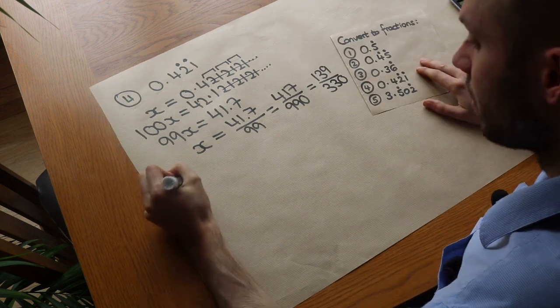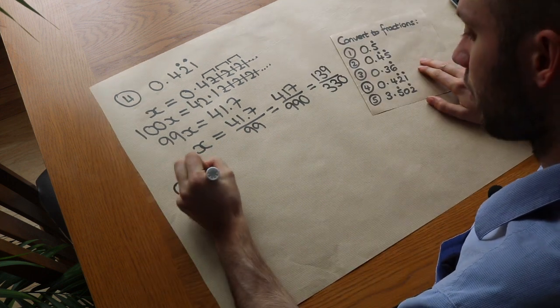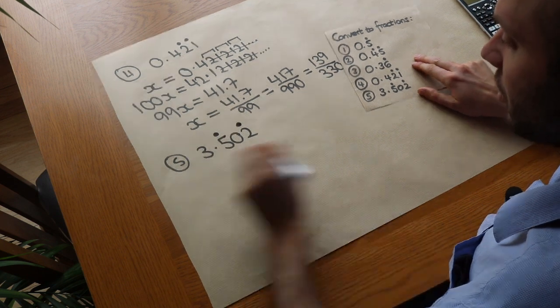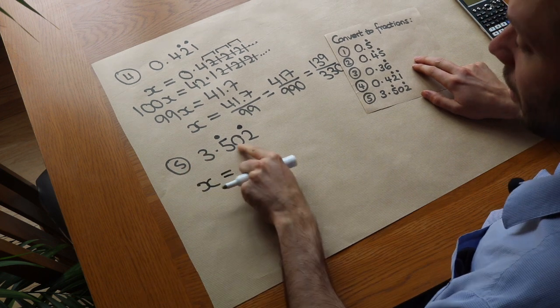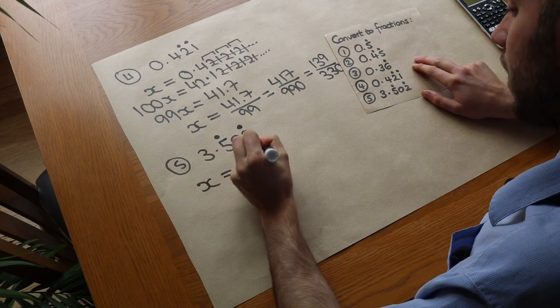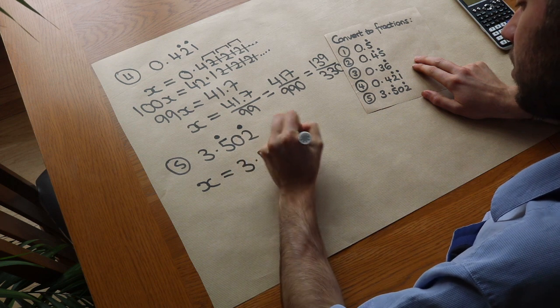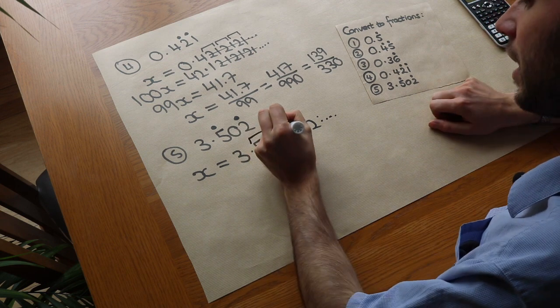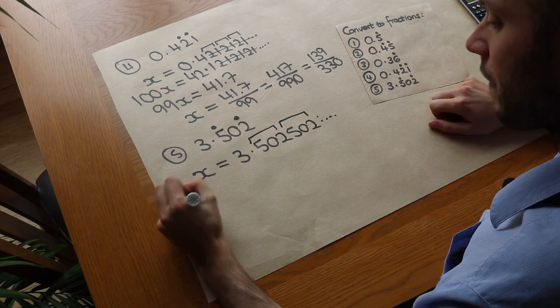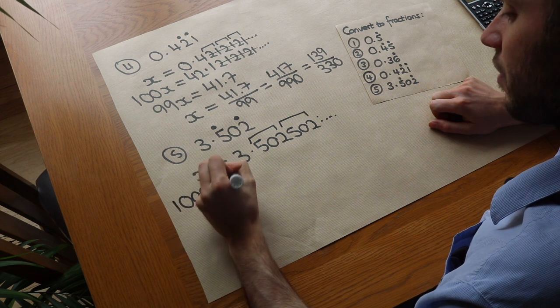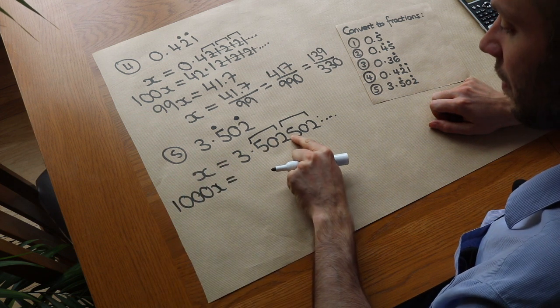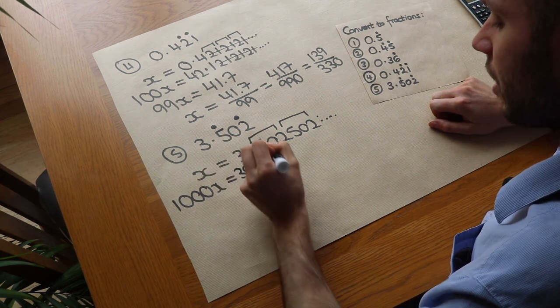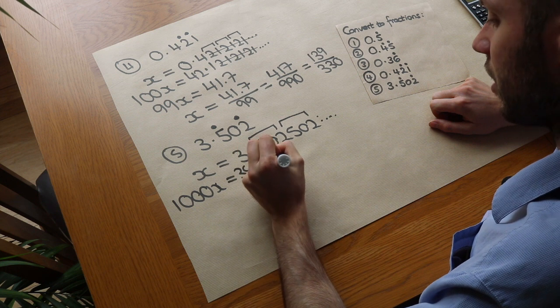And then the very last one we've got 3.502 where it's recurring between the 5 and the 2. So that means the digits repeat between the 5 and the 2. So it's 3.502, 502, 502 etc. So it repeats every 3 digits this time. So we need to times by 1000. So that moves the decimal point 3 times. 1, 2, 3. It's 3,502. I'm going to put the decimal point in the same place. 3,502.502.